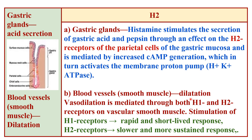Both H1 and H2 receptors cause vasodilation. Activation of H1 receptors causes calcium-dependent activation of endothelial nitric oxide synthase in endothelial cells, producing nitric oxide that diffuses to vascular smooth muscle, increasing cyclic GMP and causing relaxation — this effect is rapid and short-lived. In contrast, activation of H2 receptors stimulates the cyclic AMP and phosphokinase A pathway, causing vasodilation that is slower and more sustained.